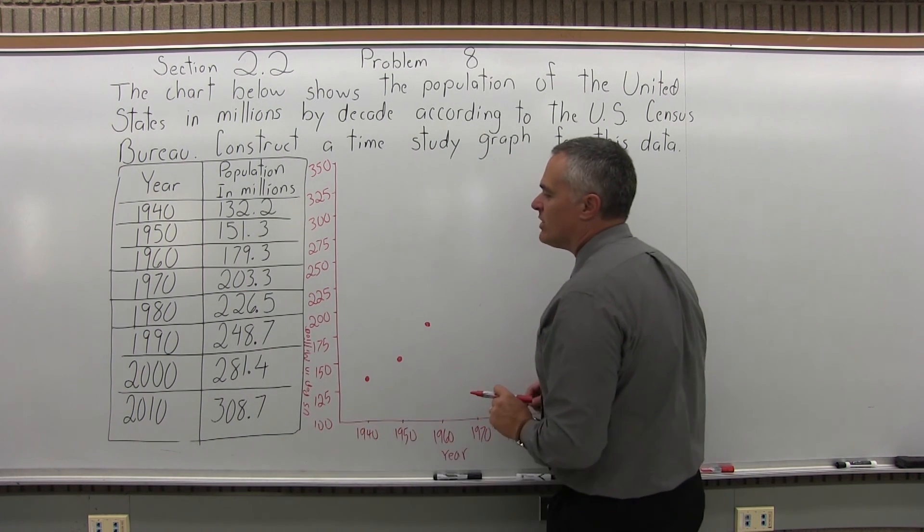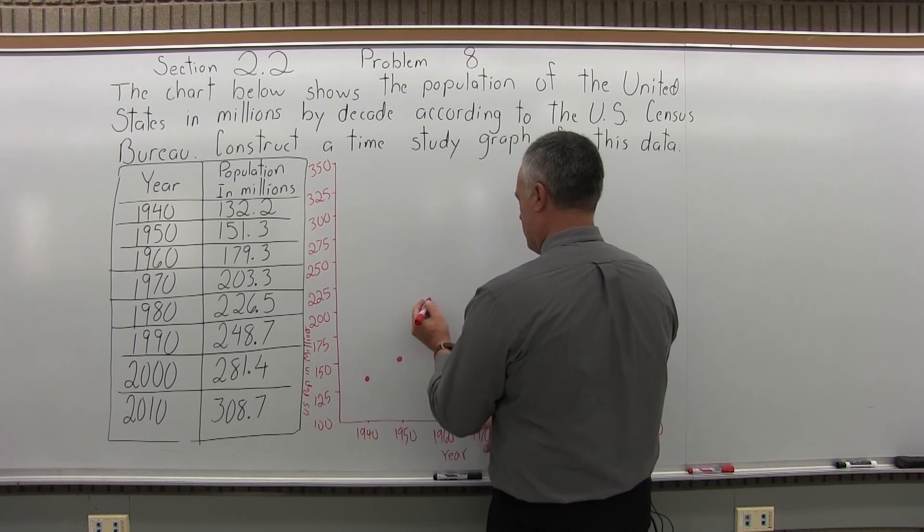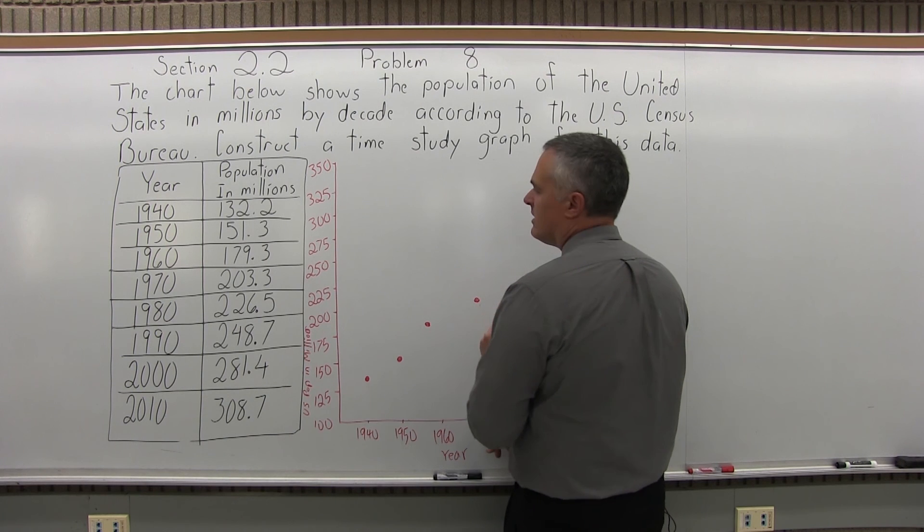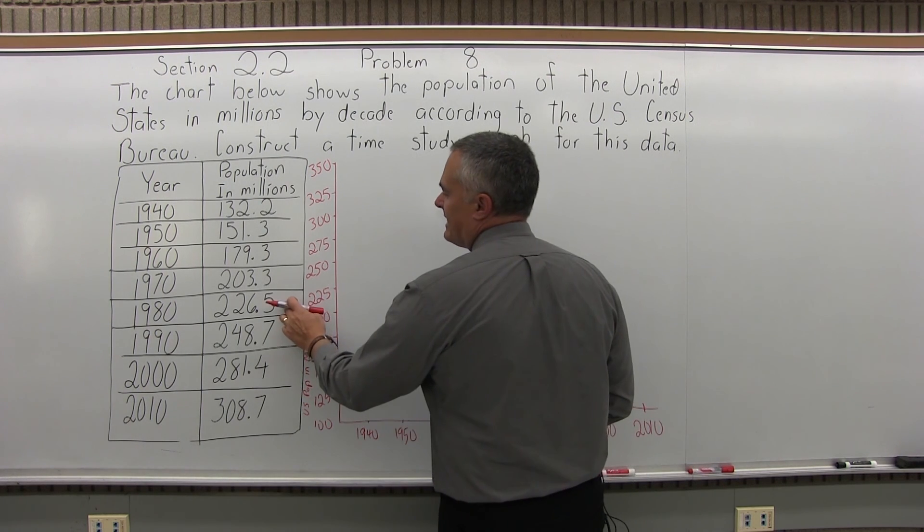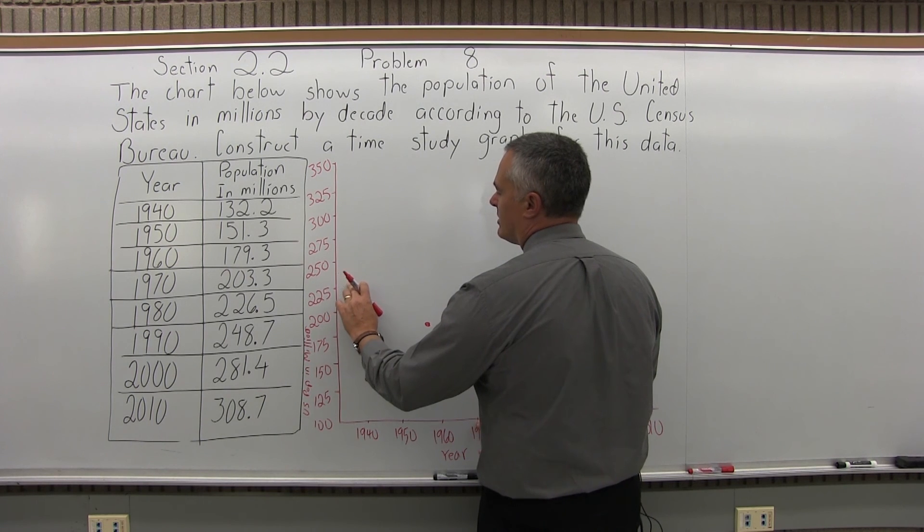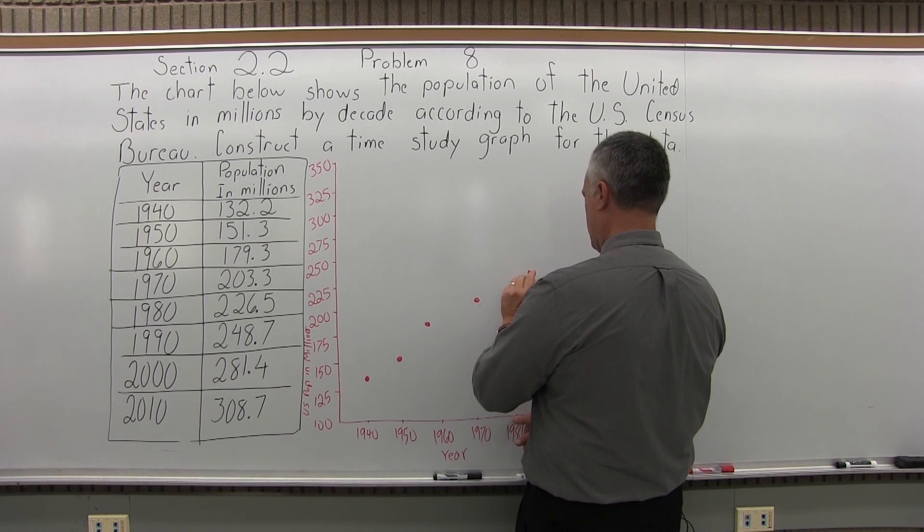The next one, 1970 is 203 million, 1970, so here's 200 million, it'd be a very tiny bit higher than that. And then 1980, 226 million, so a tiny bit higher than the 225 million for the 1980 that would intersect right about there.